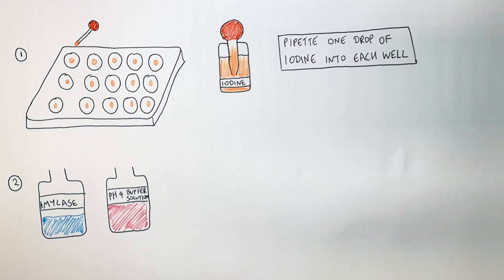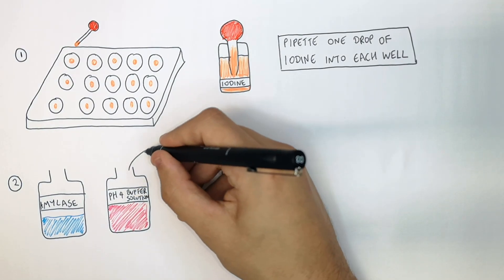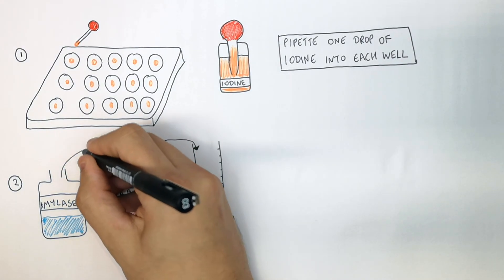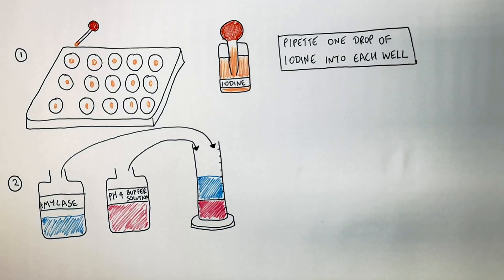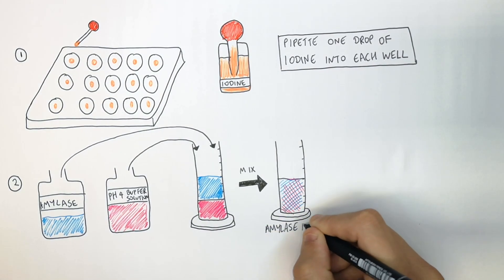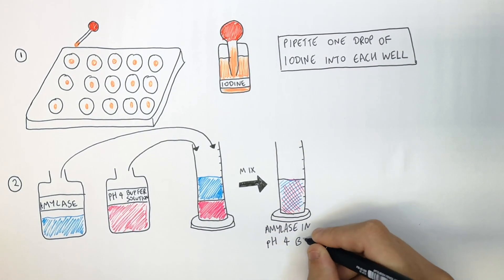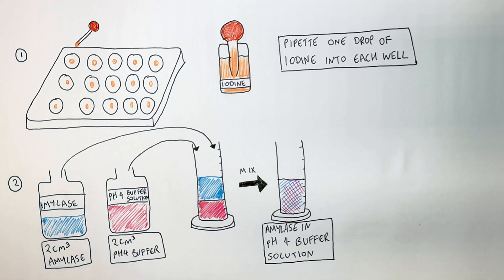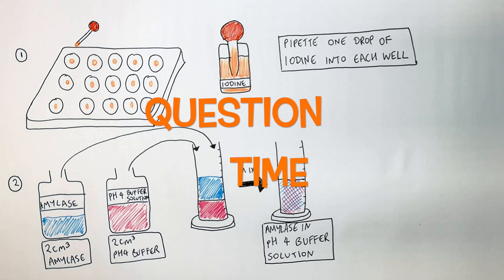Now we prepare our amylase solution at different pH values. In this scenario it's going to be pH4, so you add two centimeters cubed of the buffer solution and two centimeters cubed of the amylase solution into a measuring cylinder. Mix that solution together — you now have amylase enzyme in a pH4 buffer solution.